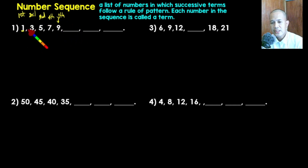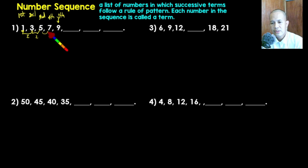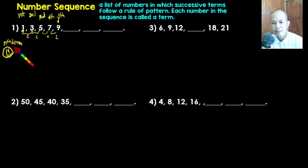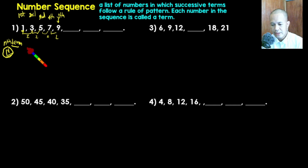By observing: one becomes three — we are just adding two. Three becomes five — we are just adding two. So we can formulate a formula. We call it the nth term formula, where n represents the term number — for example, one, two, three. Using the trial and error method, we can try multiplying n by two.